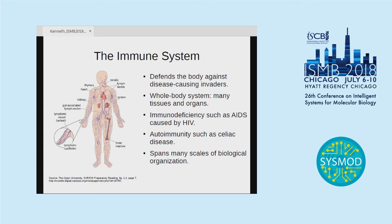This is the immune system, and its function is to defend the body against disease-causing invaders. As you can see, it is a whole body system, and it infiltrates many tissues and organs. It is under tight and fine control, because if it is too weak, it cannot fight infections — an example is AIDS caused by HIV. But if it is too strong, it will end up attacking yourself, and that's autoimmunity.